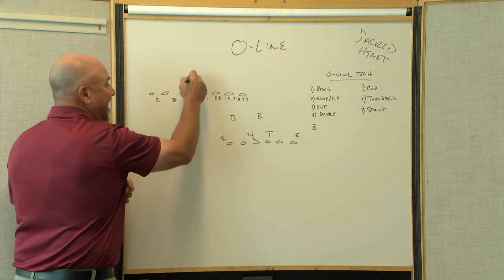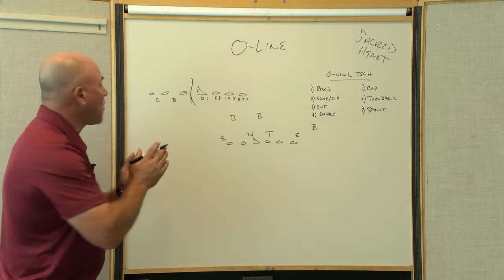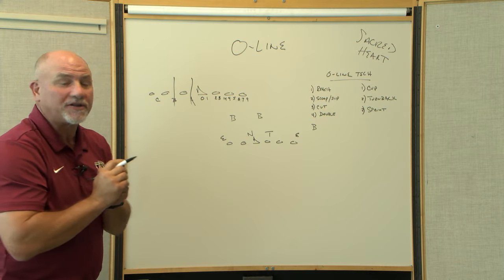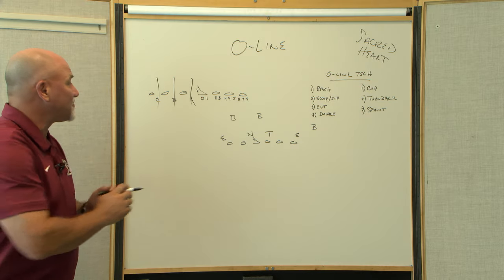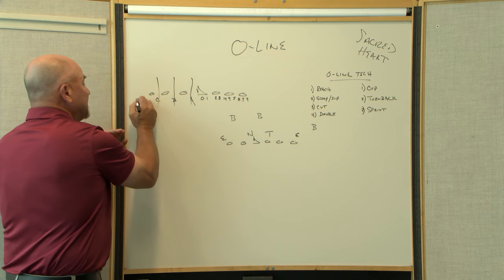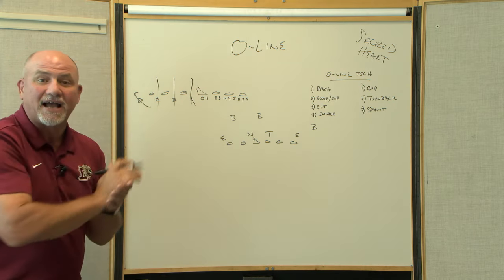Gaps: A gap between the center and the guard, B gap between the guard and the center, C gap between the tackle and the tight end. So there are your gaps: A, B, C. D would be the outside, anything to the outside sweep.